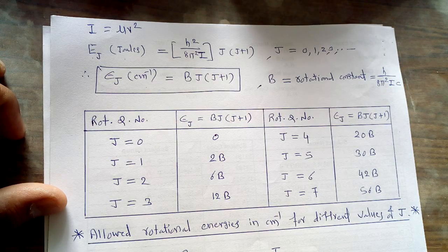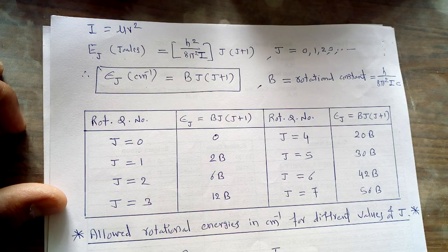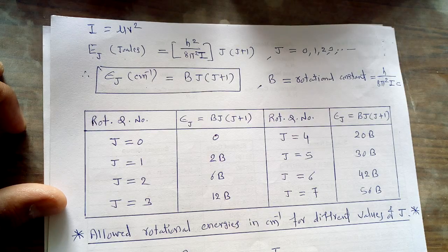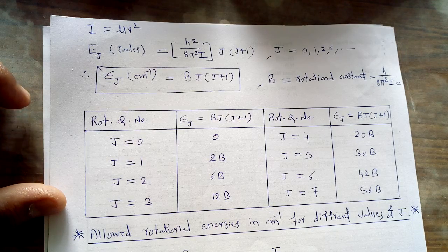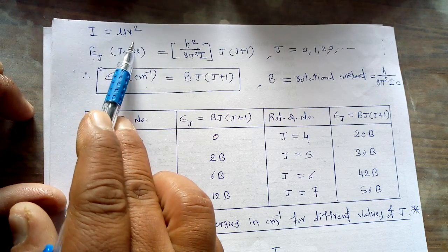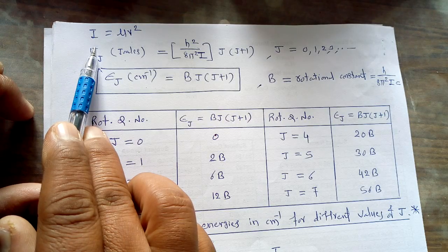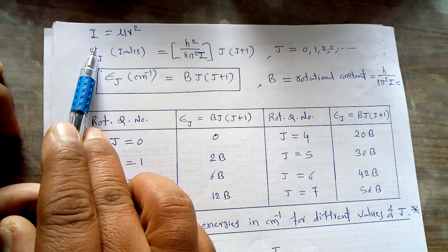In our last lecture we started the first important spectroscopic technique called microwave spectroscopy, in which we studied the introduction, the principle and other aspects regarding this microwave spectroscopy. We also completed one important point — the rotation spectrum for a rigid diatomic molecule — and derived the equation I = μR² for the moment of inertia around the center of gravity point C.